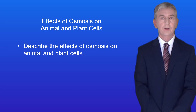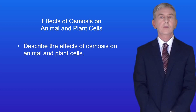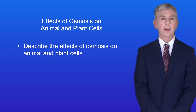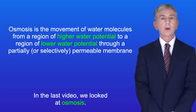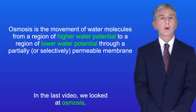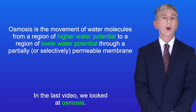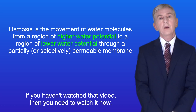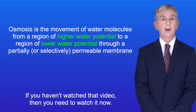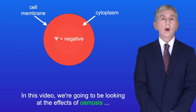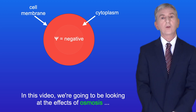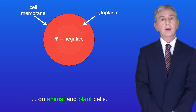Hi and welcome back to Free Science Lessons. By the end of this video you should be able to describe the effects of osmosis on animal and plant cells. In the last video we looked at osmosis — the movement of water molecules from a region of higher water potential to a region of lower water potential through a partially permeable membrane. In this video we're going to be looking at the effects of osmosis on animal and plant cells.